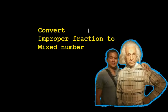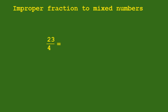Hello kids, today we will study how to convert improper fractions to mixed numbers. In this example, we have 23 over 4. Convert this into a mixed number.